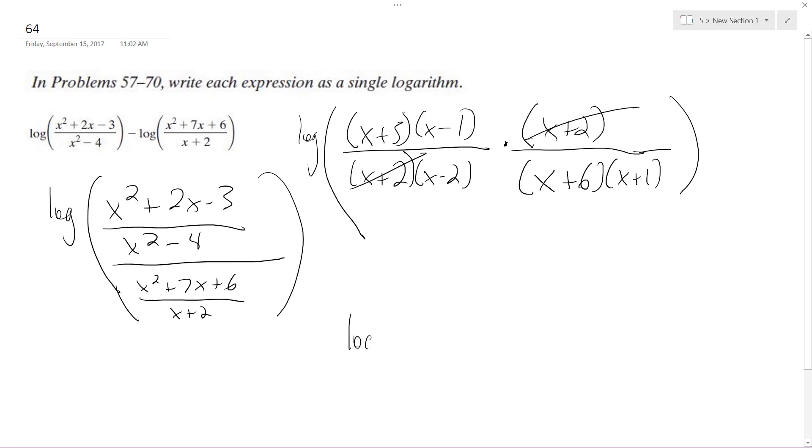So the final solution is log of x plus 3, x minus 1 over x minus 2, x plus 6, x plus 1. Alright, now I'll just leave it in factored form like that. That's it.